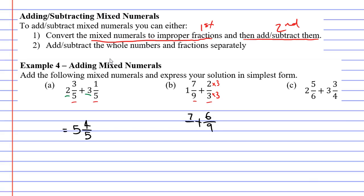The other fraction was seven over nine, with a whole number of one next to it. We're still adding our fractions: seven over nine plus six over nine. The denominator stays as nine, and seven plus six is thirteen. Now that I've added the fractions I need to add the whole numbers — but there's only one whole number, so we just place the one next to our fraction. It equals one and thirteen ninths.